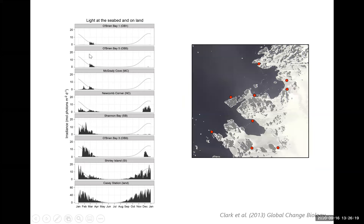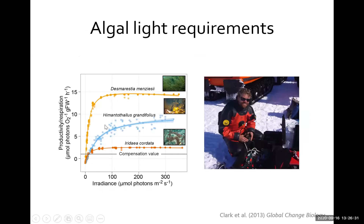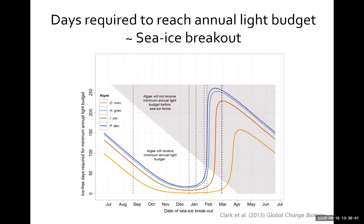We deployed a bunch of light meters around the coast around Casey and collected a lot of data on how much light is reaching the seabed each year. You can see that some sites — the ones that break out just before ice forms again — are receiving only a little bit of light, all the way down to sites where it's ice-free for nearly the whole year round. We then did a bunch of experiments — this is John Runcy who led most of this work — looking at how much light the algae actually need to survive in a year.